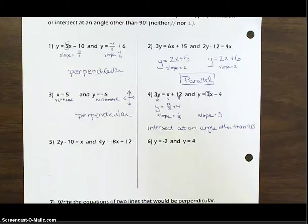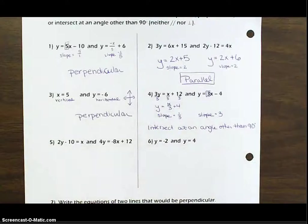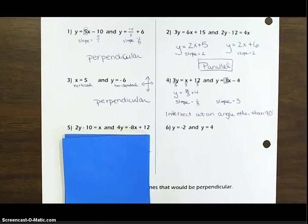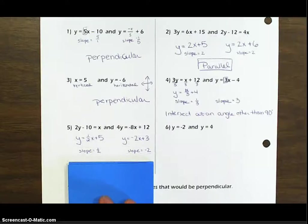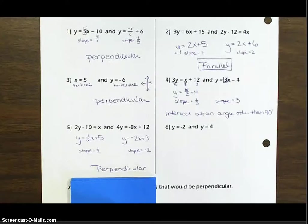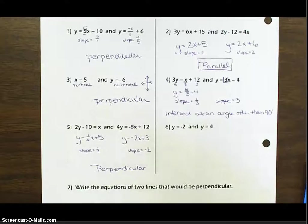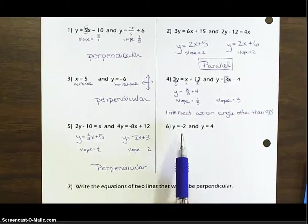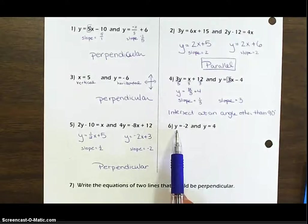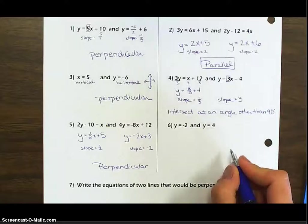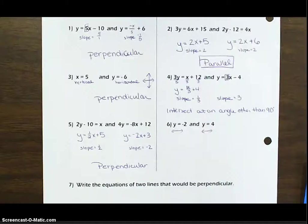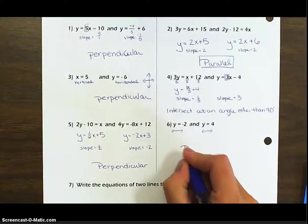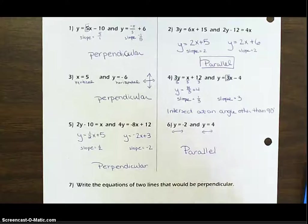Let's take a look at number five. Converting to slope-intercept form, we get y equals 1 half x plus 5 and y equals negative 2x plus 3. Our slopes are 1 half and negative 2, which means they are perpendicular. Now number six: y equals negative 2 and y equals 4. These are both horizontal lines — y equals a number — so they go straight across the screen in the same direction, which means they are parallel.